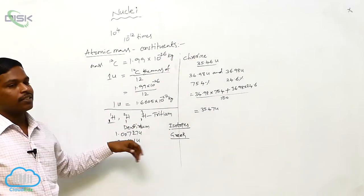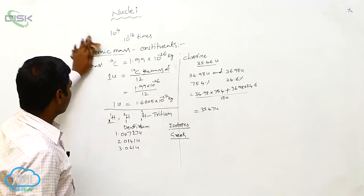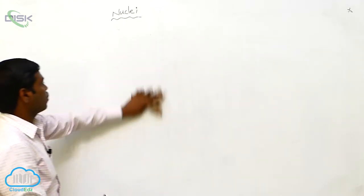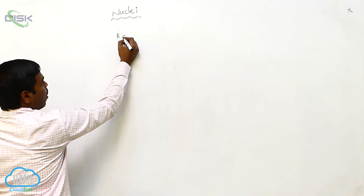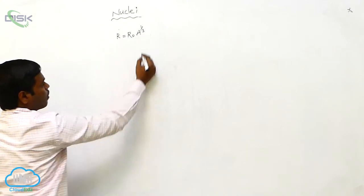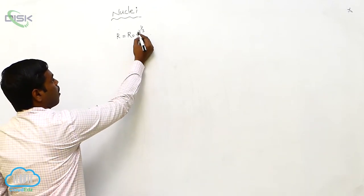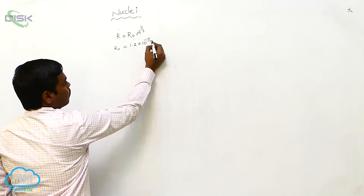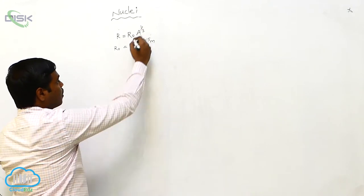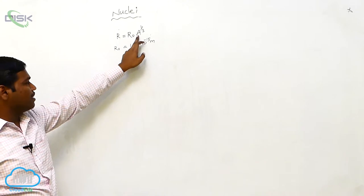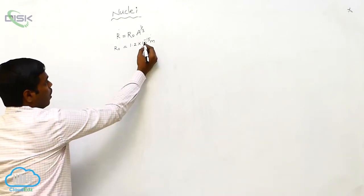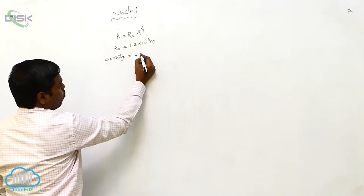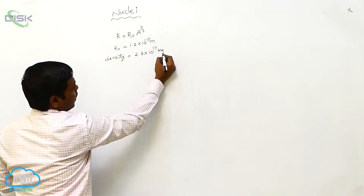These are the components present in the nucleus. The size of the nuclei is given by R = R₀ × A^(1/3), where A is the mass number and R₀ is a constant equal to 1.2 into 10 to the power of minus 15 meters. So the size of the nucleus depends on the mass number. The density of the nuclei is 2.3 into 10 to the power of 17 kg per meter cube.